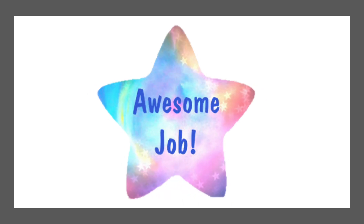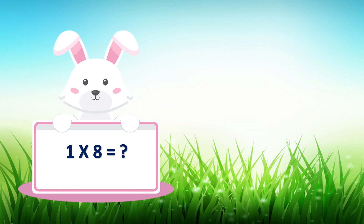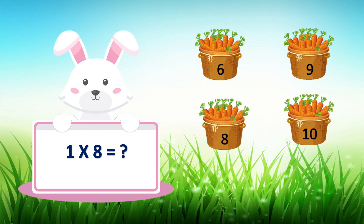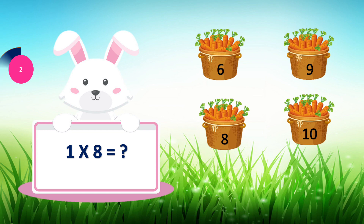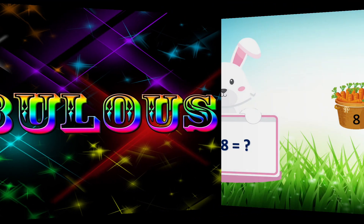Awesome job! So guys, this is a bunny. What does a bunny like to eat? Carrots! So the options will be about carrots. The question is: what is 1 into 8? The options are 6, 9, 8, and 10. I told you there would be carrot options! Your time starts now. The correct answer is 8 carrots. Fabulous!